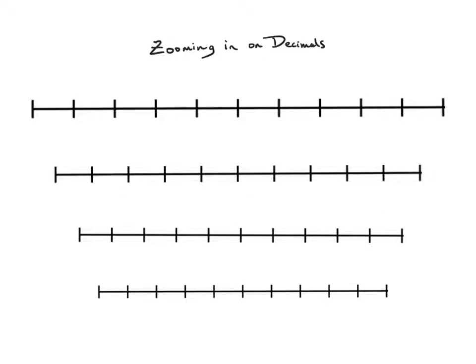In this video we're going to see what we can discover when we zoom in on decimals on a number line. My number line on the top starts at zero and goes all the way to one whole. I'm going to label everything with decimals so we can see the scale of my number line.